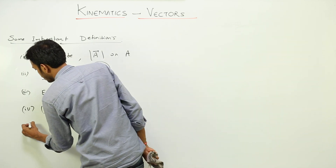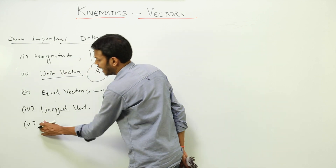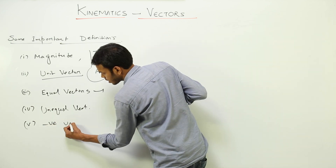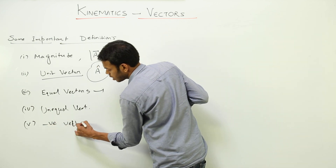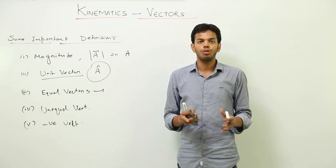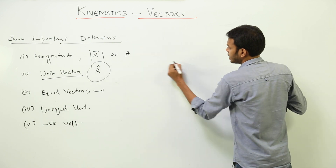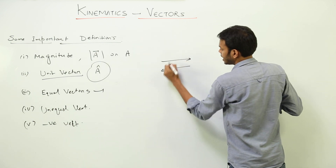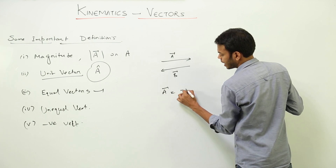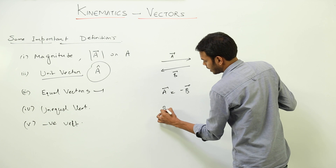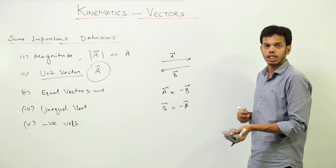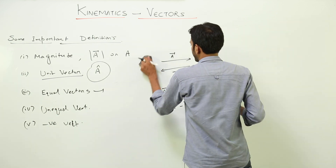Another term is negative vectors. Two vectors are said to be negative vectors if they are equal in magnitude but opposite in direction. So if this is vector A and this is vector B, then vector A is the negative of vector B, or vector B is the negative of vector A.